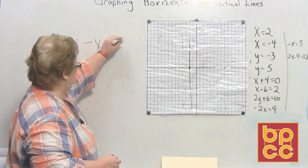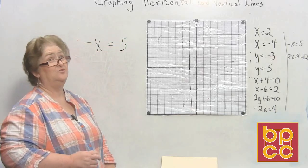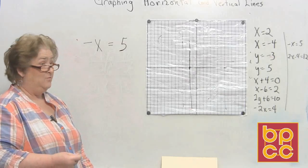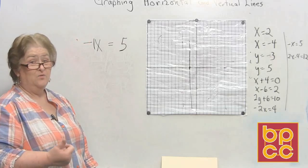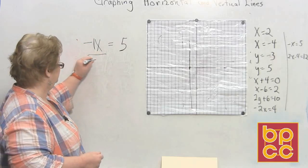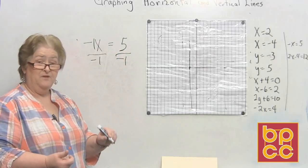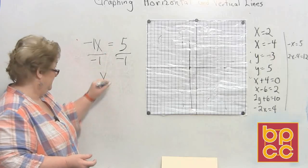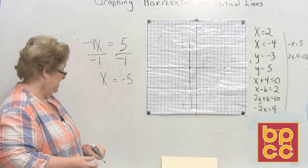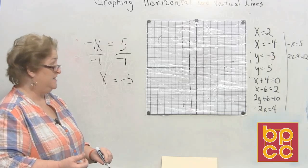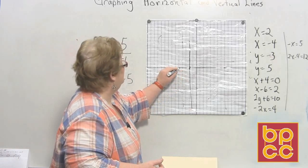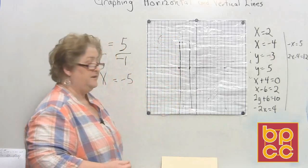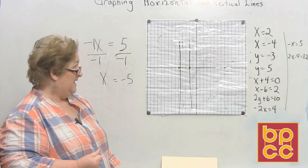Negative X equals 5. That looks real ready, but look — there's a negative. That's negative 1X, with a coefficient of negative 1. I'm going to have to divide by negative 1. When I divide both sides by negative 1, I end up with a positive X. And negative 1 into 5 is negative 5. So I'm going to go on the X axis to a negative 5, and because it has to physically cross over itself, there is my X at negative 5.